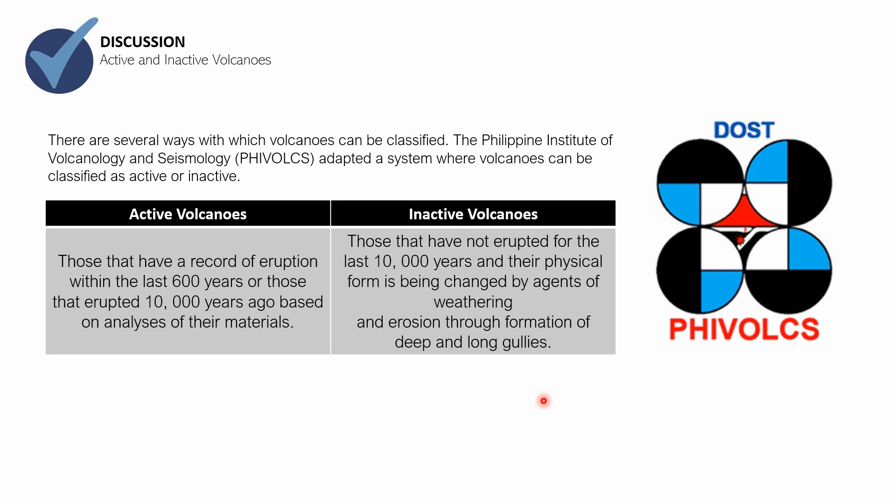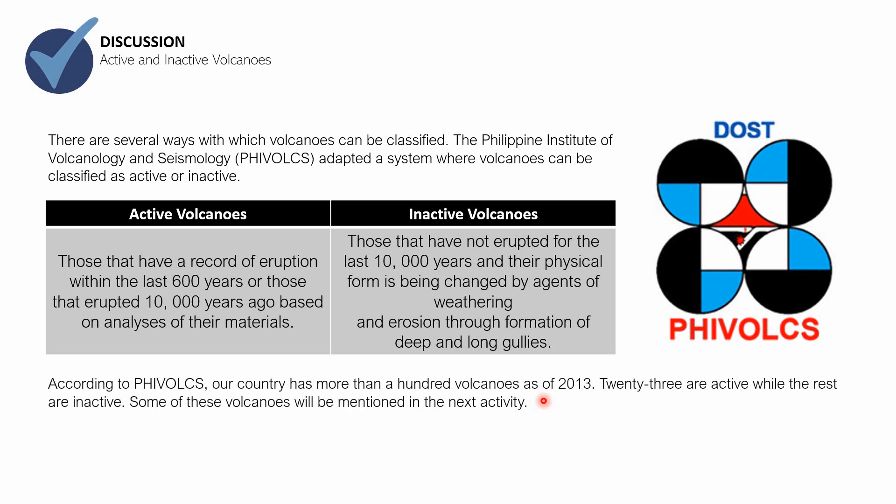We can also consider a volcano as inactive if it does not have a historical record of eruption in the last 600 years, and no eruption evidenced by rock materials either. According to PHIVOLCS, the Philippines has volcanoes — 23 of which are currently active, while the rest are inactive. Of course, this number can change, as nature is unpredictable. Some of these volcanoes will be mentioned in the next activity.